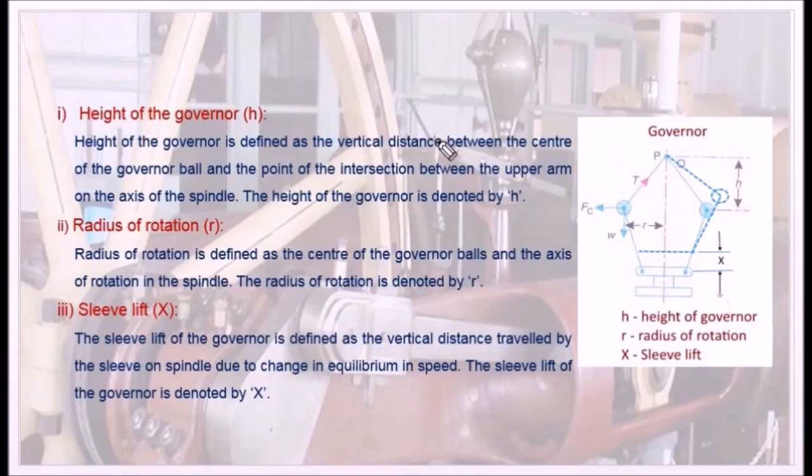As usual, let us see the details of this diagram first. This diagram represents a ward governor. We know very well that the central line is the spindle. And these two lines are the upper arms carrying two controlling balls. The upper arm is pivoted with the spindle at the point P.